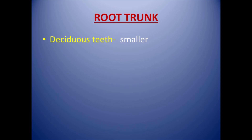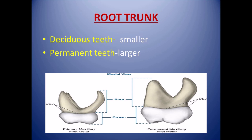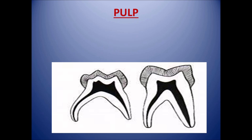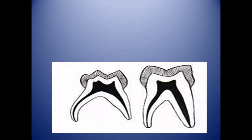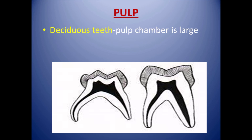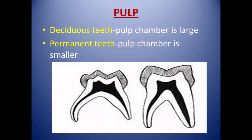Regarding root trunk, in deciduous teeth the root trunk is smaller as compared to permanent teeth, because in permanent teeth the furcation is more towards the apex as compared to deciduous teeth. Coming to the pulp, in deciduous teeth the pulp chamber is large and pulp horns are higher as compared to permanent teeth, in which pulp chambers are smaller.